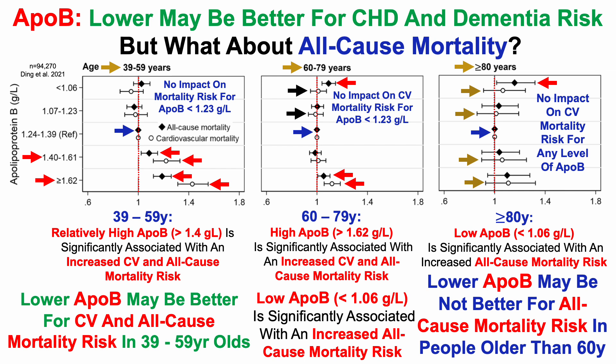So in terms of the initial premise of this video — for APO-B, is lower always better? — based on all-cause mortality risk, if you're older than 60, maybe not. If you're 39 to 59 years, that could be true.